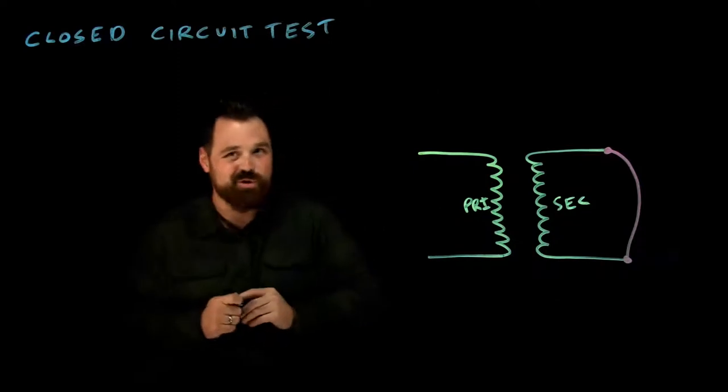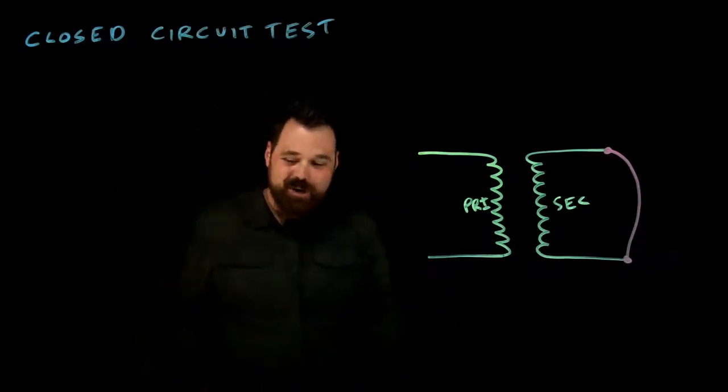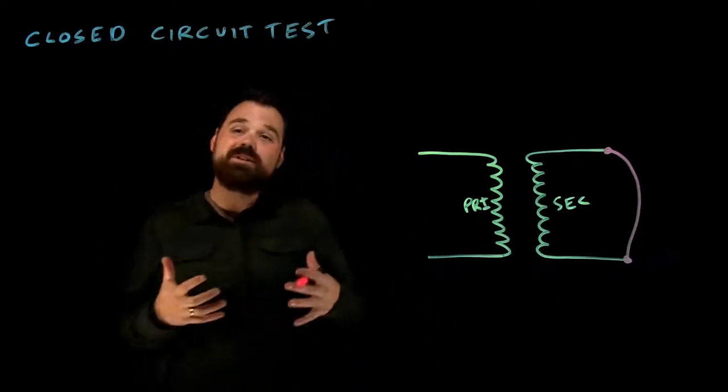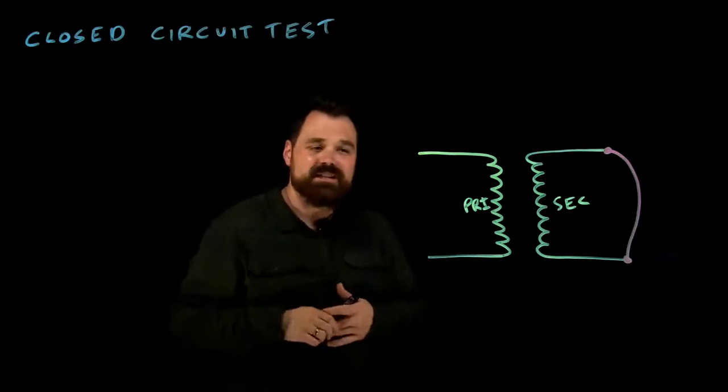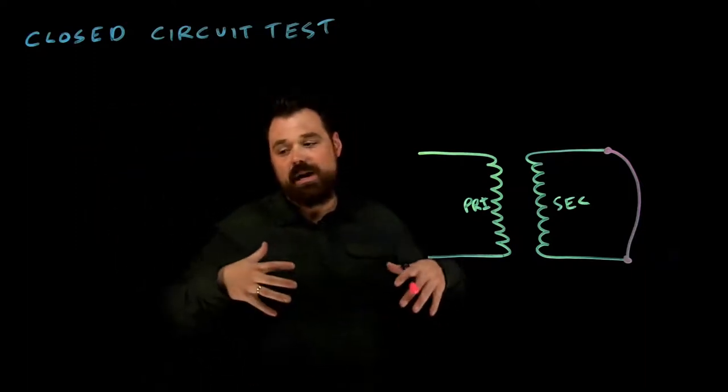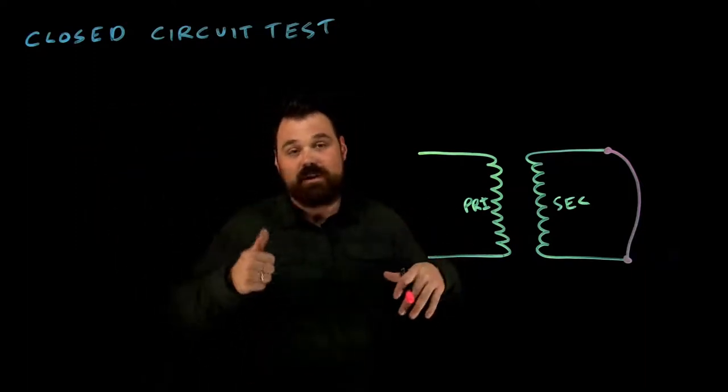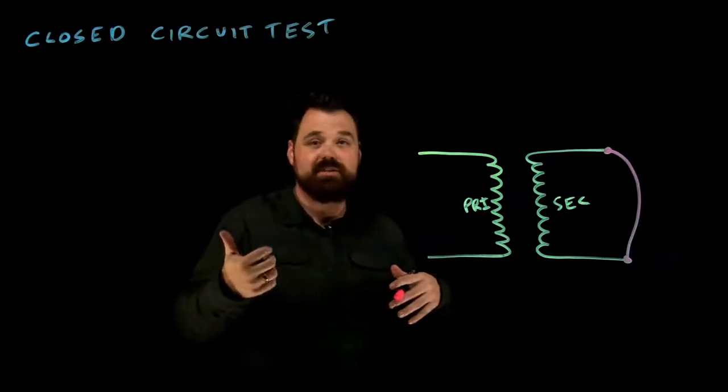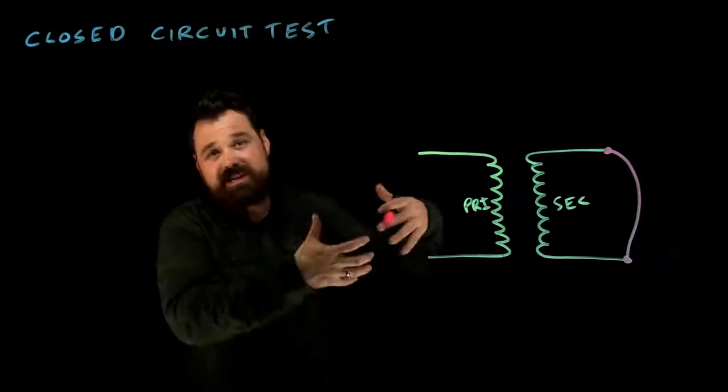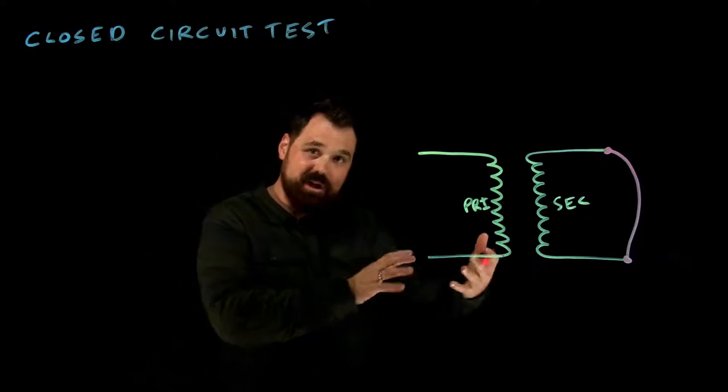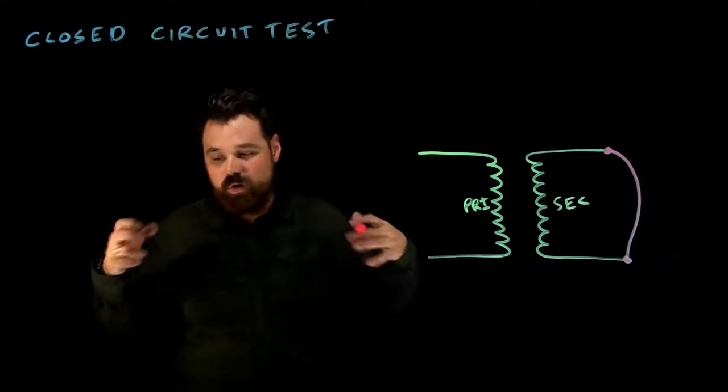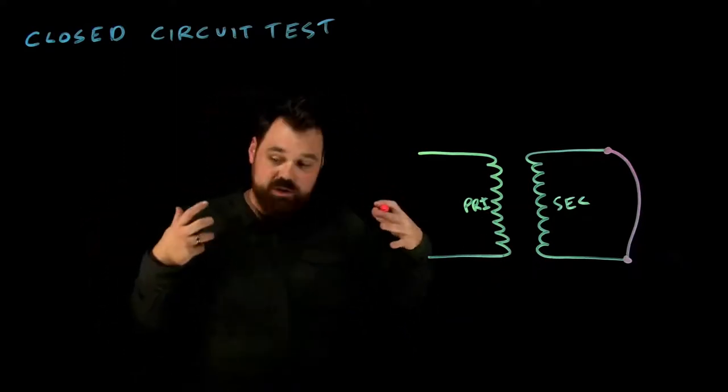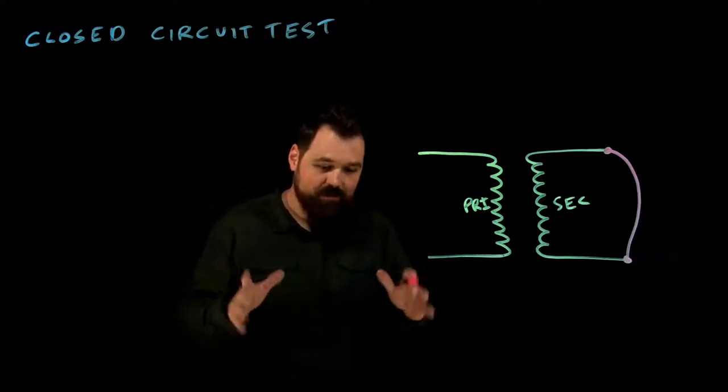What we're going to do is short it out. Now let's talk about it. With this closed circuit test, we're using it to find two things: the percent IZ of the transformer, or the percent voltage impedance required to overcome the losses of the transformer, or we can even use it for copper losses. And that's what our wattmeter will measure.